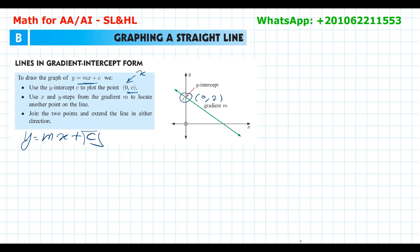After that, use the x and y steps from the gradient m to locate another point on the line. The slope could be ½, ⅔, or 1. If it's 2/3, you move 2 steps in the positive direction on the y-axis and 3 steps in the positive direction on the x-axis. If it's -1/2, you move 1 step in the negative direction for y and 2 steps in the positive direction for x. Then join these two points.